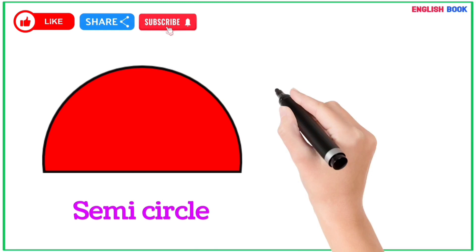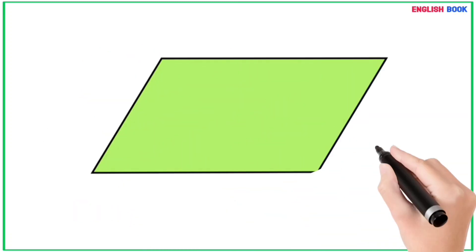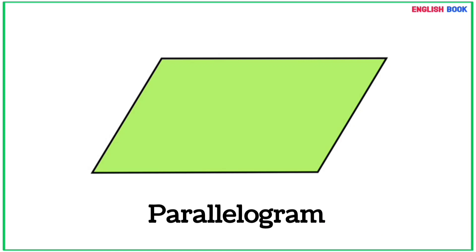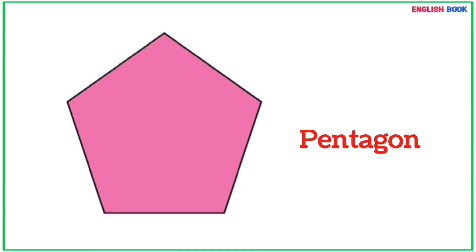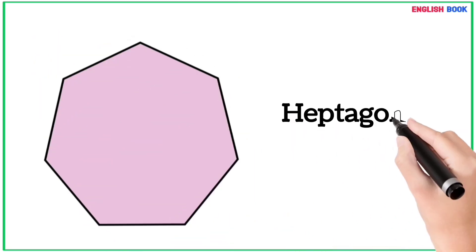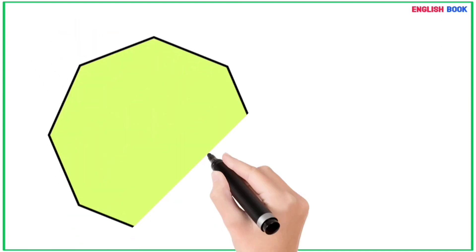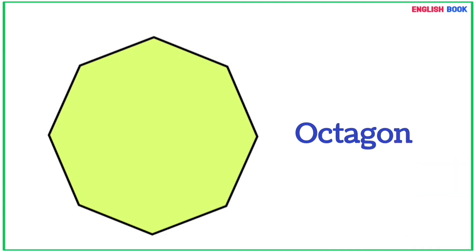Semi-circle - protractor is an example of semi-circle. Parallelogram. Hexagon. Heptagon or septagon.